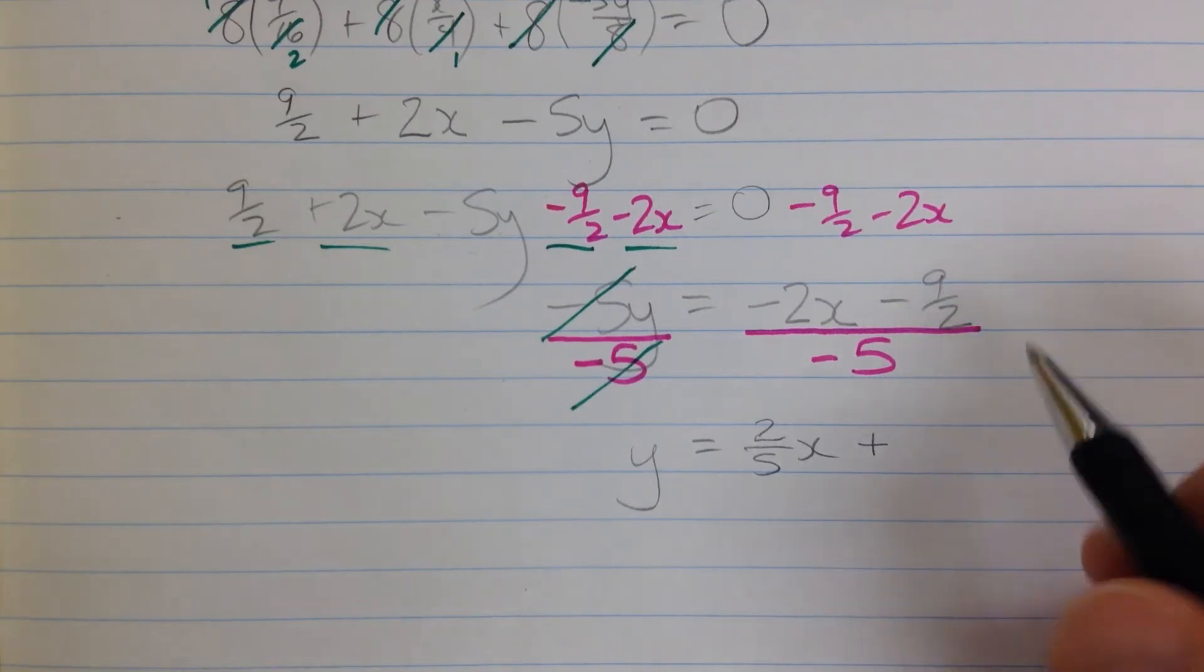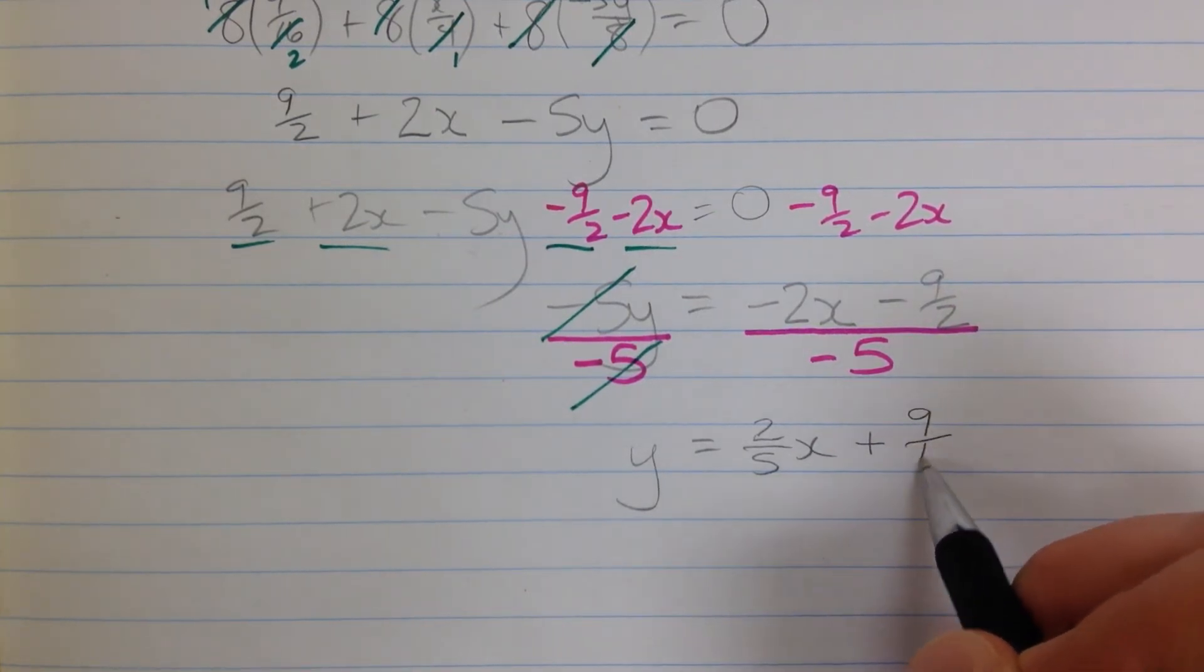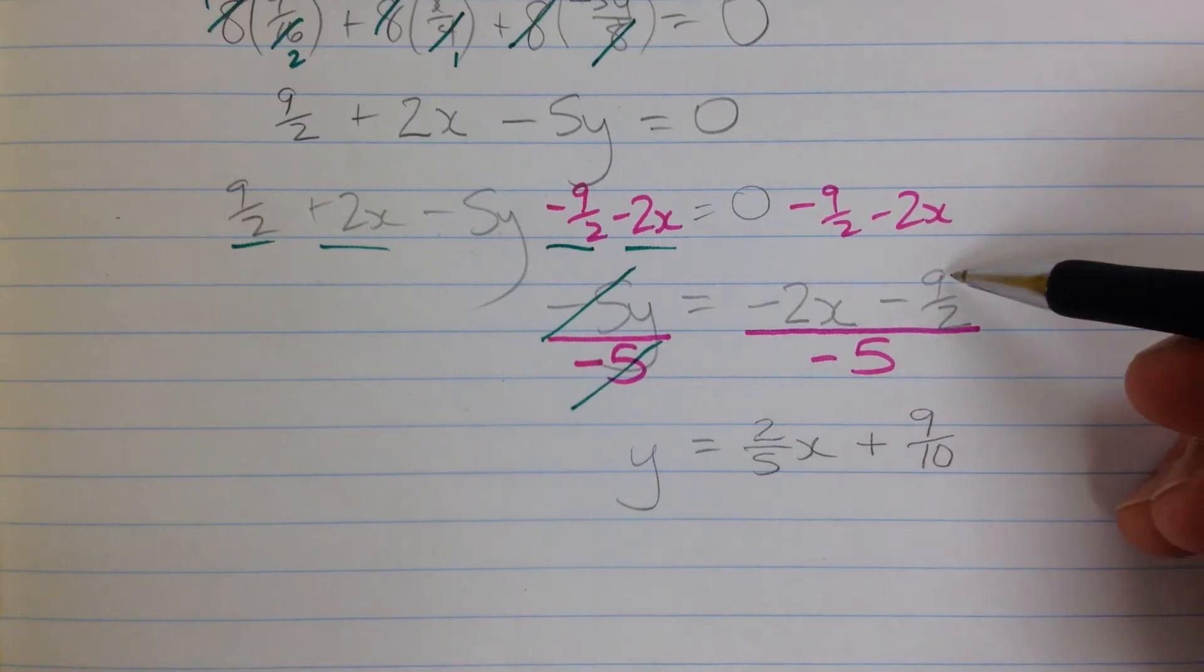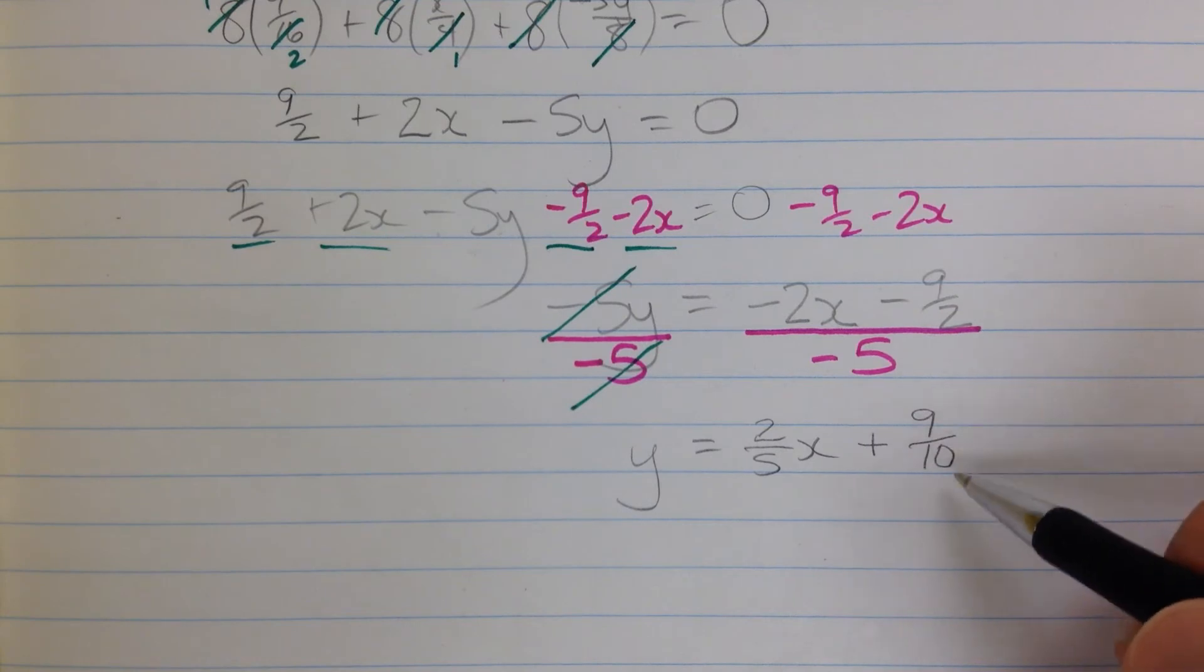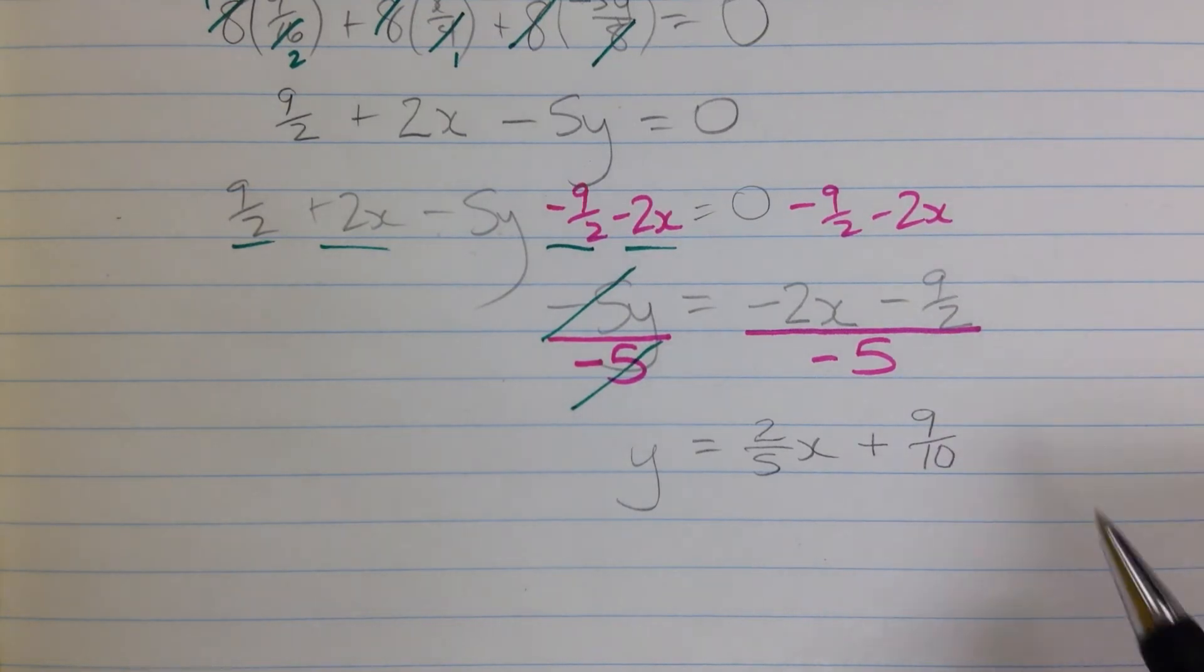That's 9 tenths. 9 divided by 2, and then the whole thing is divided by 5. That's like having 2 times 5 in the denominator, which gives you 9 tenths.